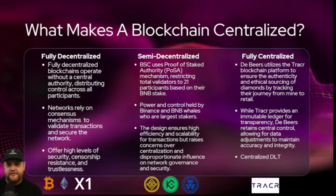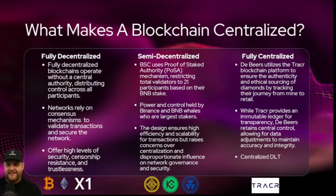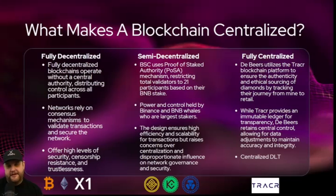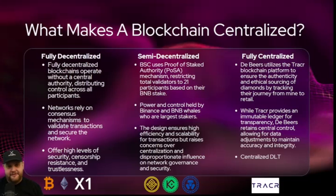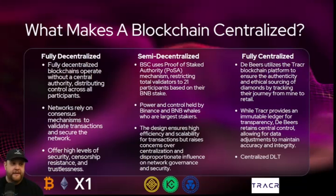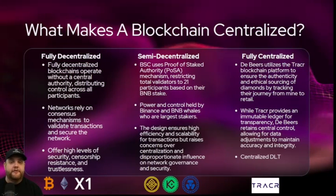One key for thinking about centralization and blockchains: it's not really a yes-or-no answer. There's nothing that's really fully decentralized or fully centralized — it's more of a spectrum, and it's actually called a trilemma. You basically have three problems: speed, security, and centralization. When you increase one, you take away from another. Solving that trilemma is the goal of the next generation of blockchains, including X1.